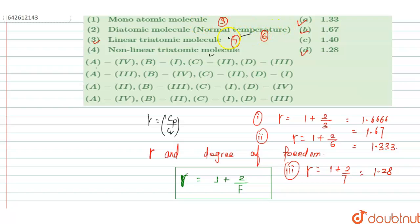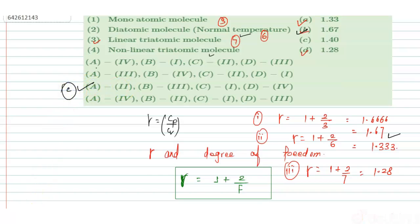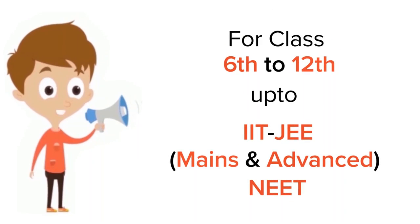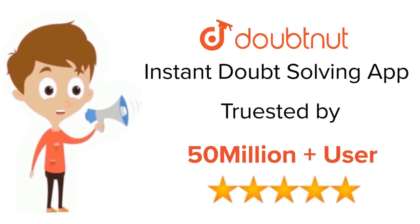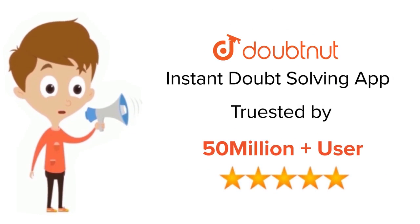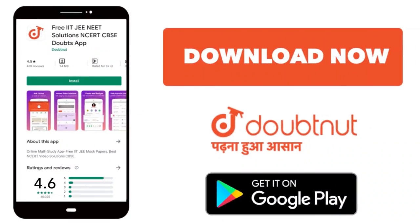To summarize: for the monoatomic molecule, gamma equals 1.67. For the second option, option C is the right answer. Thank you. For class 6 to 12, IIT-JEE and NEET level — trusted by more than 5 crore students. Download the Doubtnut app today.